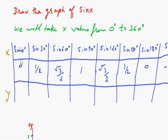We know that sin 0 degree is 0, sin 30 degree is 1 divided by 2, sin 60 degree is square root 3 divided by 2, and sin 90 degree is 1.